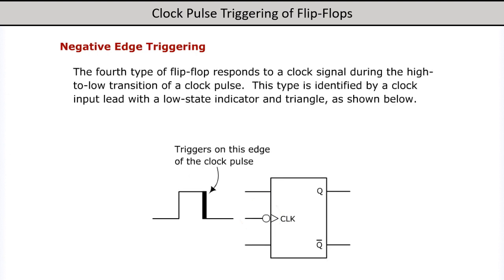Negative edge triggering: the fourth type of flip-flop responds to a clock signal during the high to low transition of a clock pulse. This type is identified by a clock input lead with a low state indicator and triangle, as shown below.